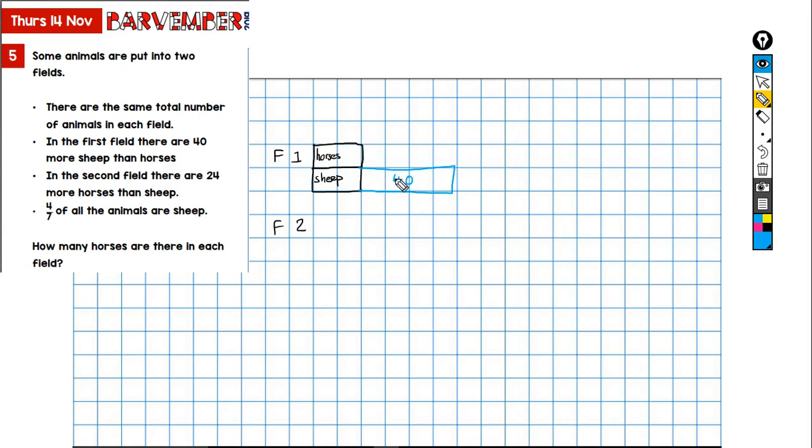I actually have no idea how big this ought to be compared to this. You know when you're drawing it what it means and what you know and what you don't know as it were. Okay, let's go on to field two. So we've got horses and we've got sheep.